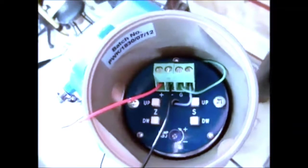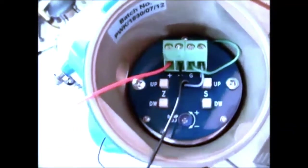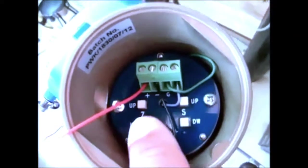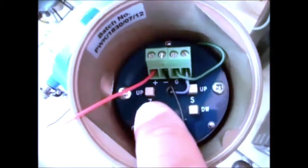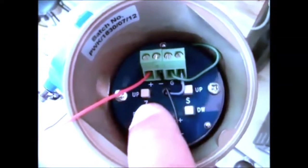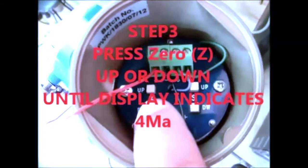So we want 4 mA as our low scale. That's the zero point which is shown as Z right here. We're going to press down on the Z button until our display shows 4 mA.